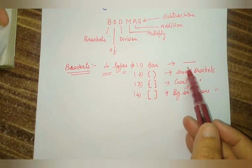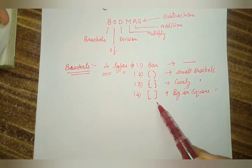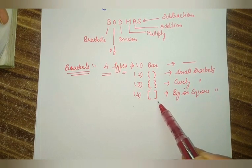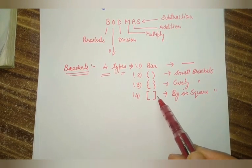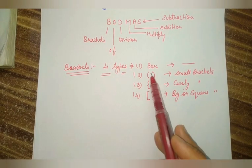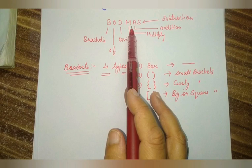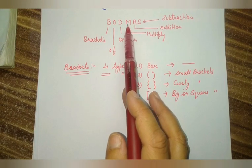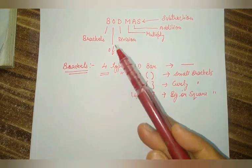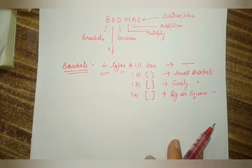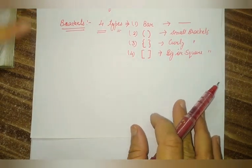So first of all, if division is given, we solve the division first, then after multiplication, then addition, and subtraction. Now I am going to solve this rule with the help of one example.